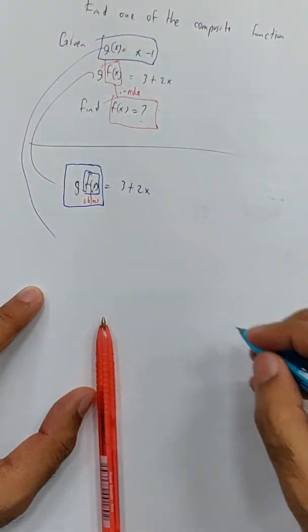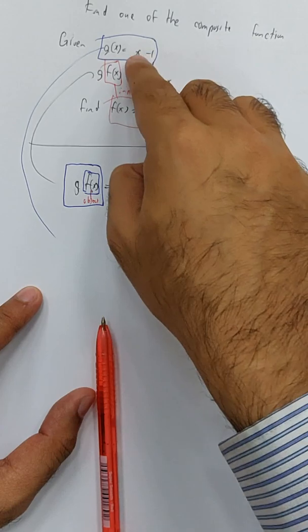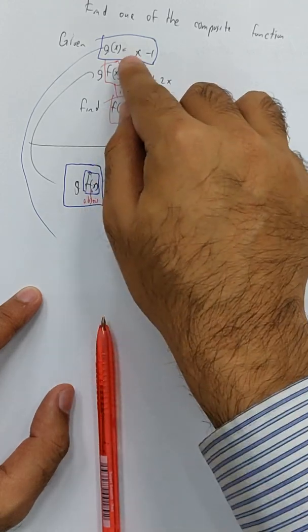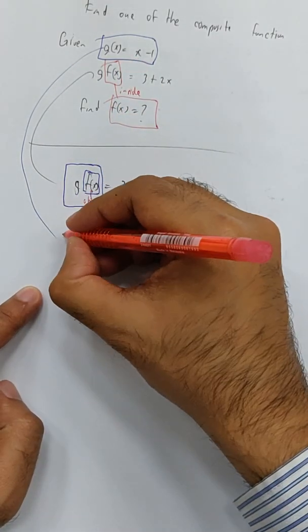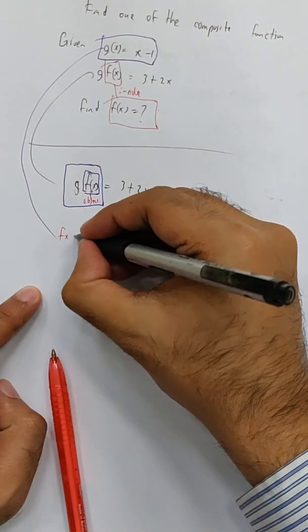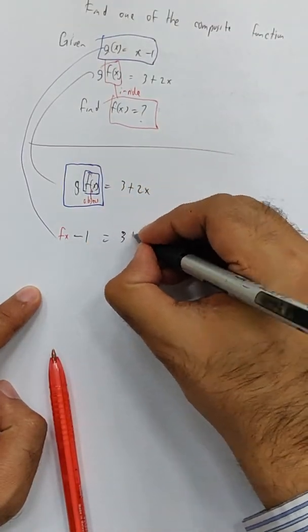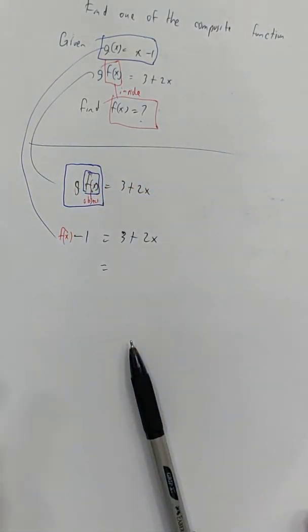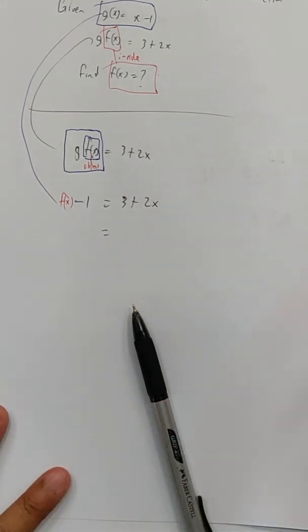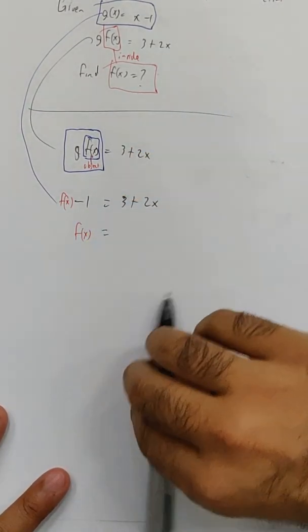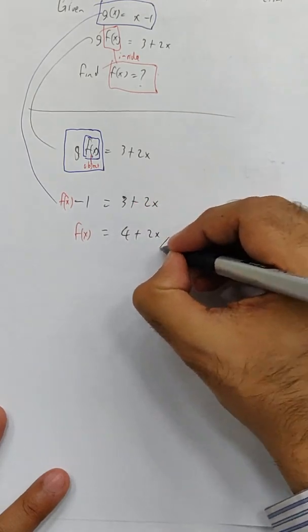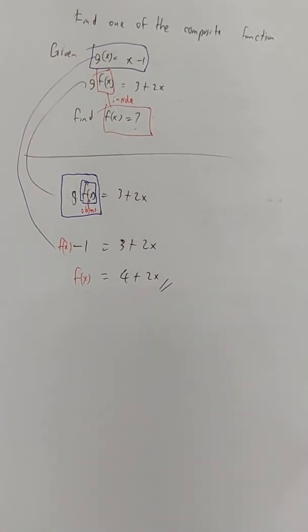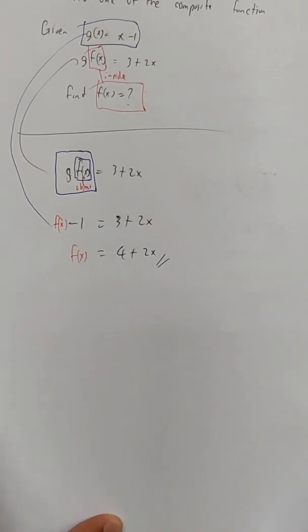Refer to this one here. So g is x minus 1, right? So right now your object is your f(x). So it becomes f(x) minus 1 equals 3 plus 2x. Okay, we got it. So f(x) is 4 plus 2x. Too many things in the head can cause you some problem. So this one is too easy.